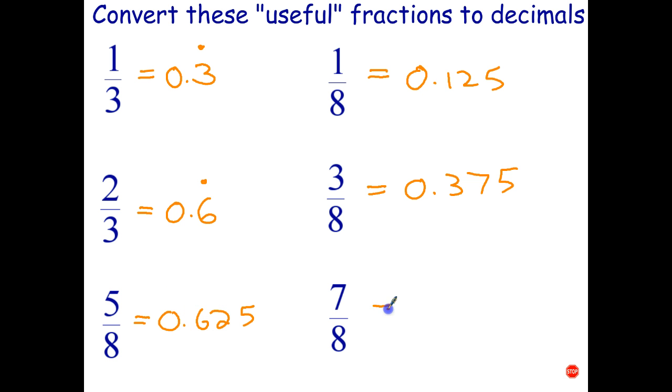To get 7/8, well, you could multiply that by 7, or you could say I'm going to take away 1/8 from 1. So 1 minus 0.125 is 0.875.